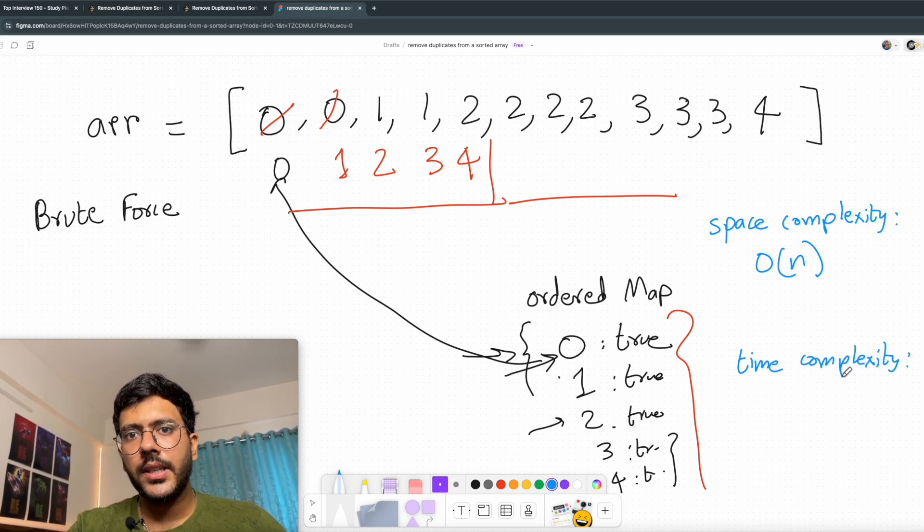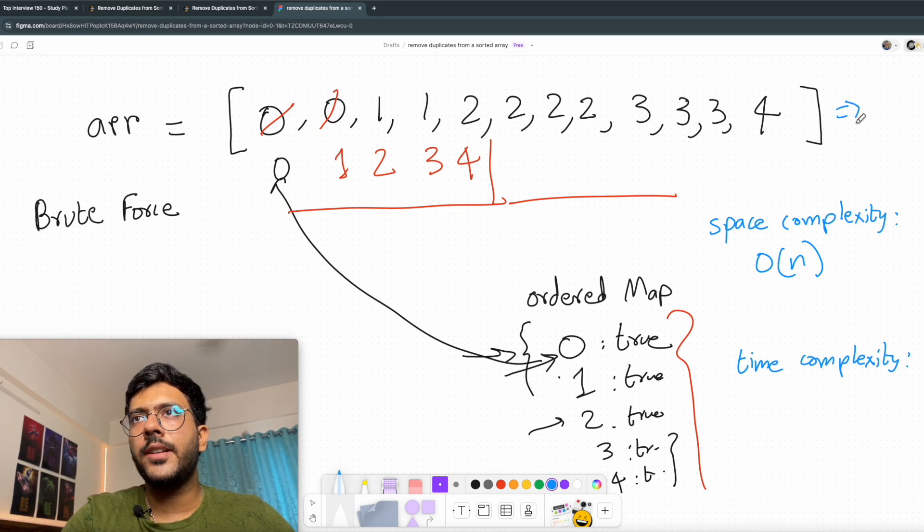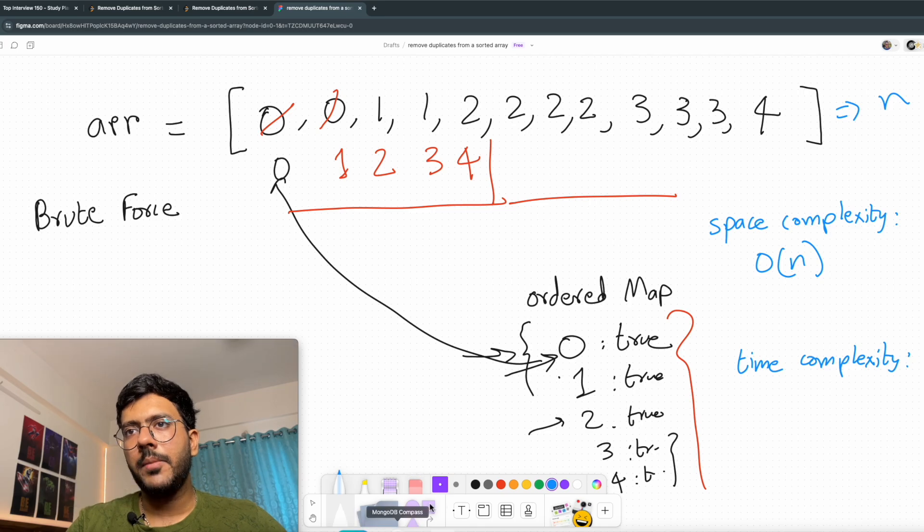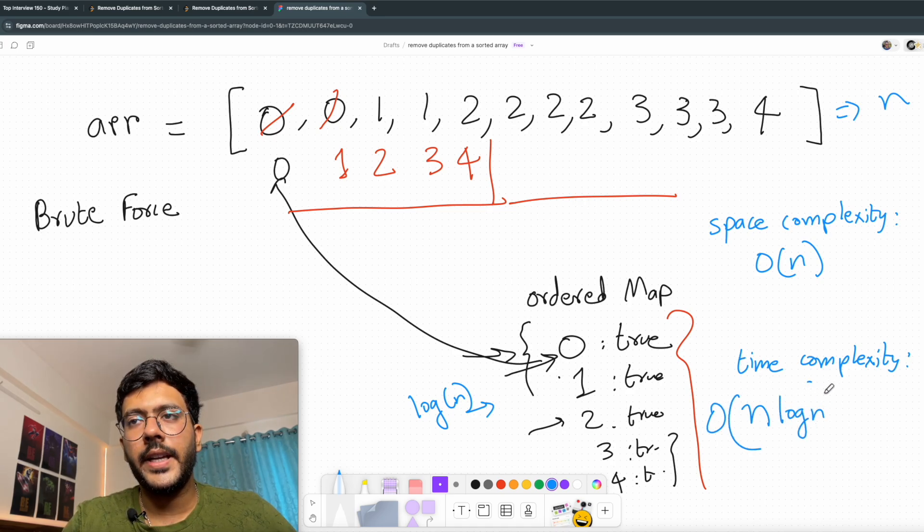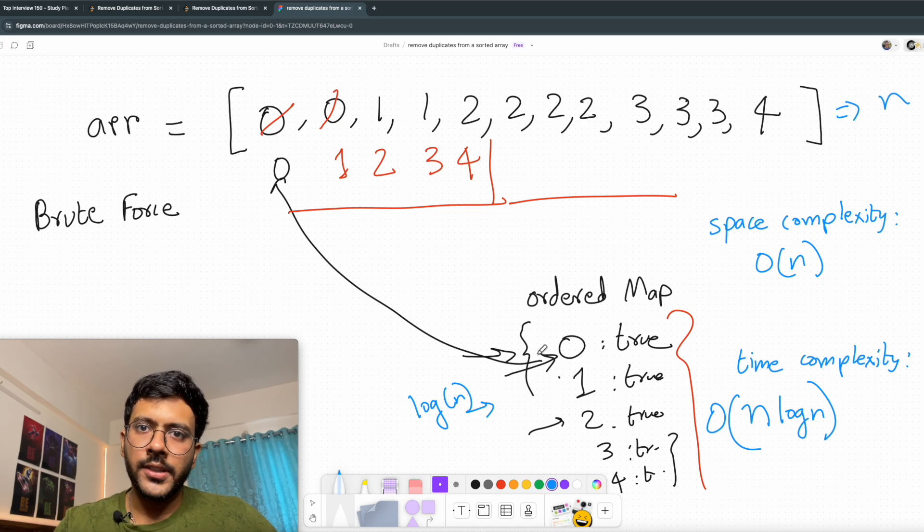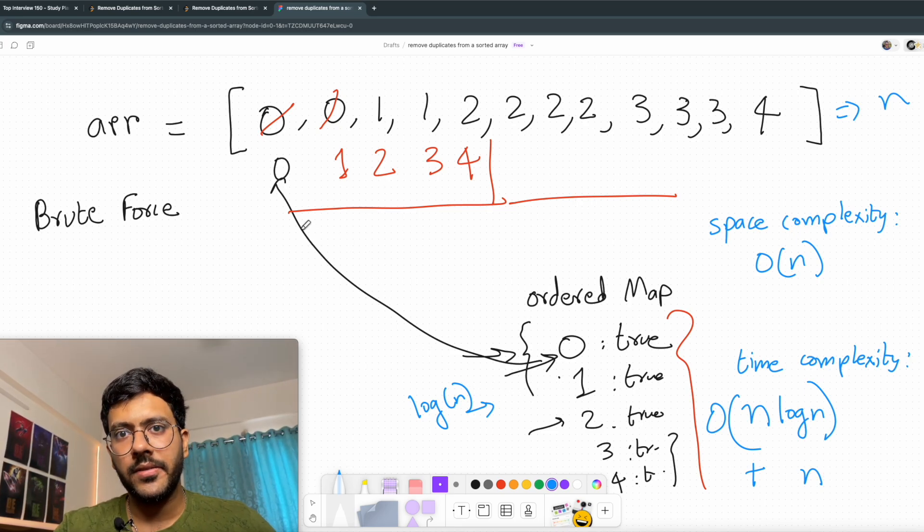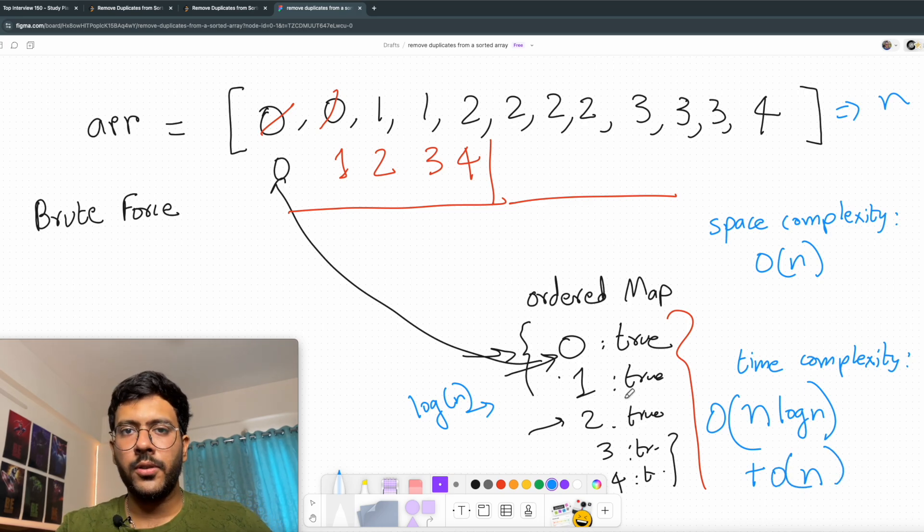Talking about time complexity, I had to traverse my array n times because the size of the array is n. So I had to traverse my array n times and I had to enter data in the map n times. Time complexity to insert one element in the map is log n since this is an ordered map and we had to do this n times. So time complexity is order of n log n plus we had to perform another operation. After I created my map, I had to traverse through my map to put data back into the array from the beginning. Now the size of the map can be n and time complexity to add data to the array is 1. So it will be n log n plus order of n. So these are my space and time complexities for my brute force solution.